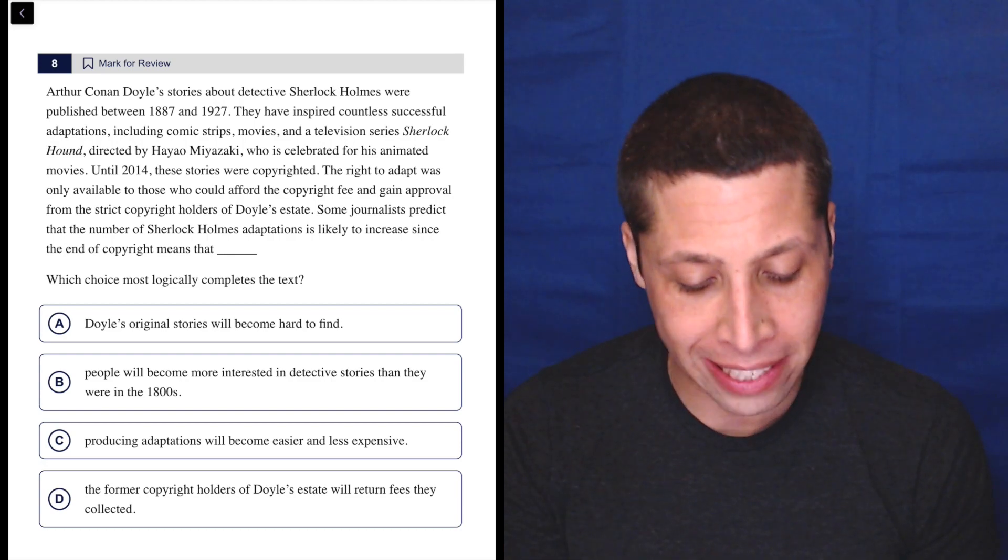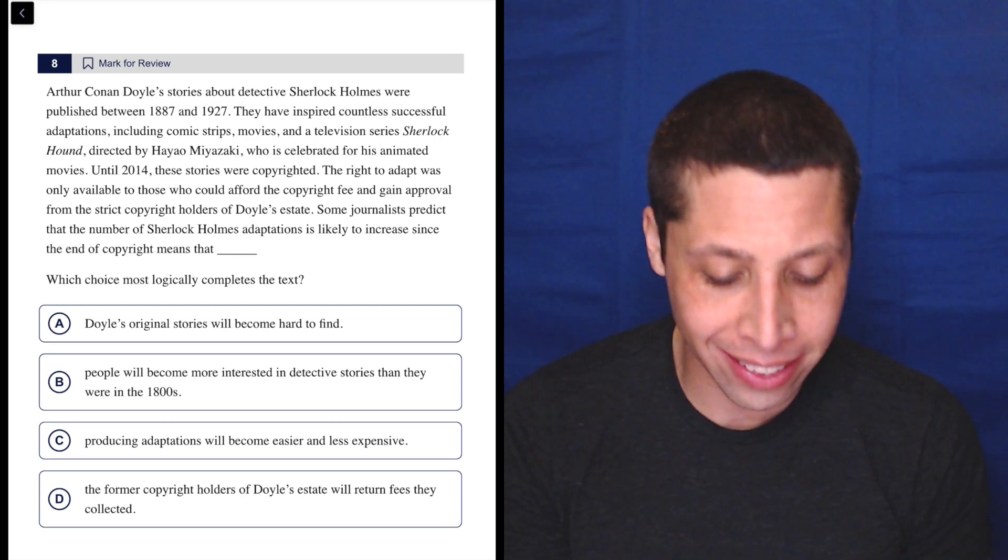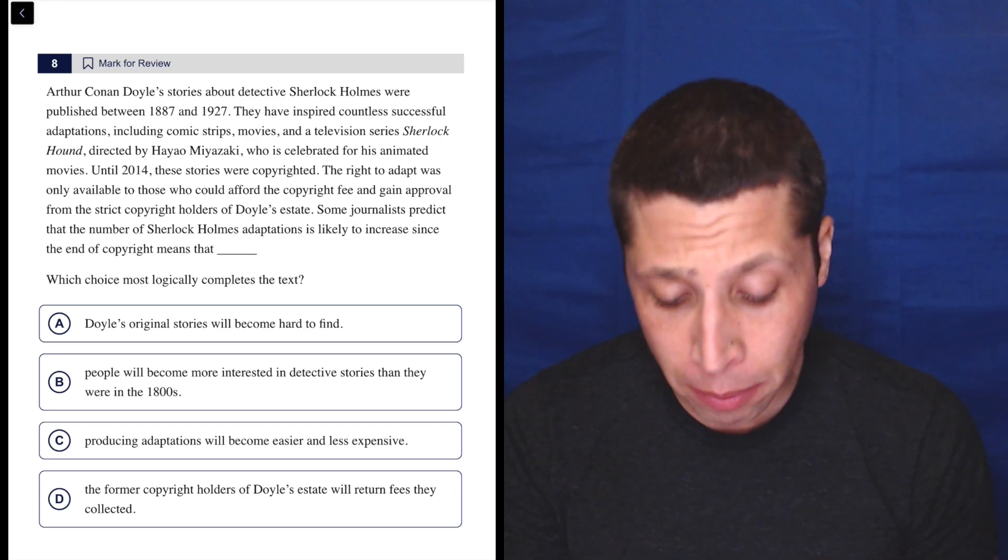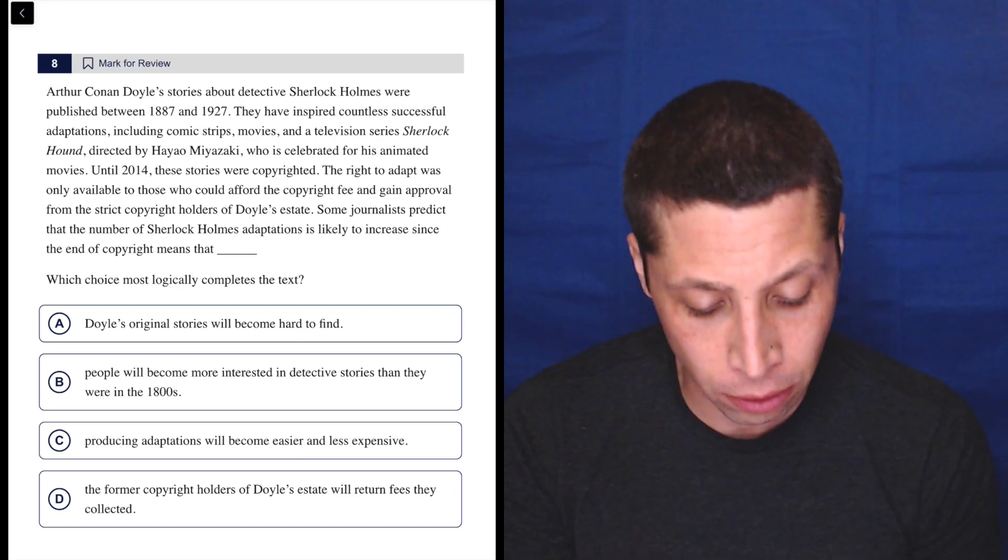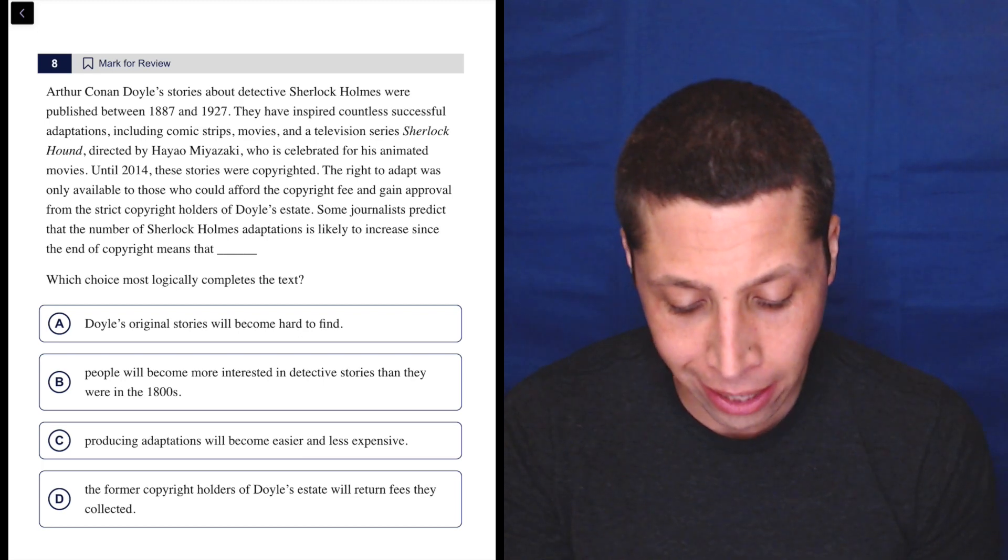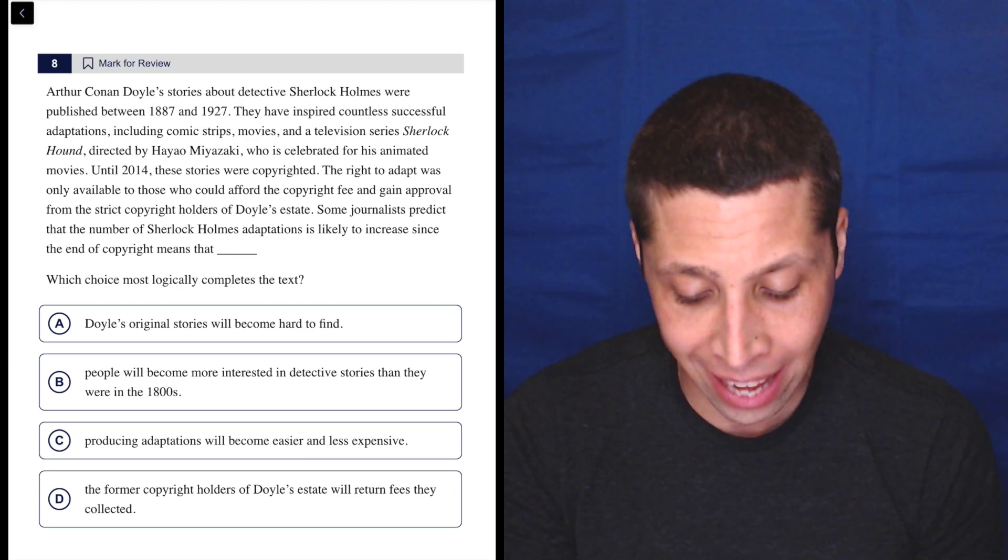Arthur Conan Doyle's stories about Detective Sherlock Holmes were published between 1887 and 1927. They've inspired countless successful adaptations, including comic strips, movies, and a television series Sherlock Hound, directed by Hayao Miyazaki, who was celebrated for his animated movies.